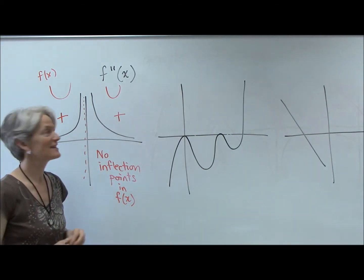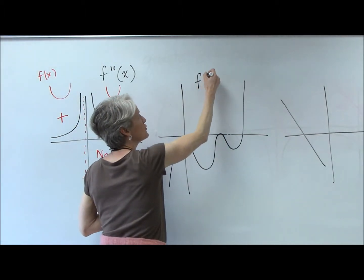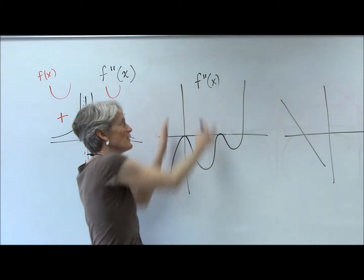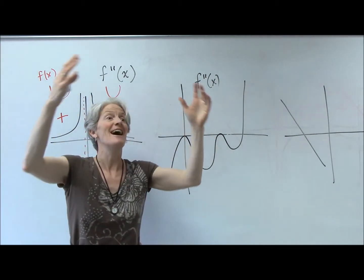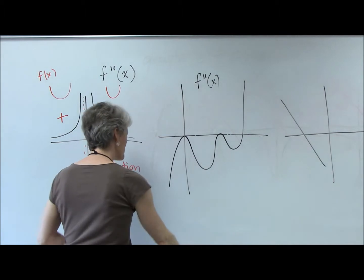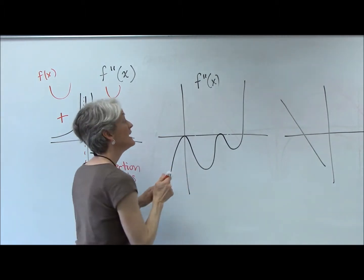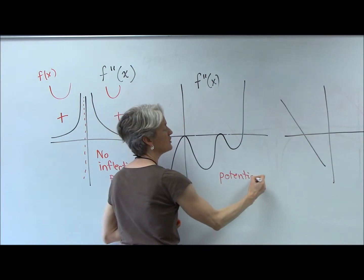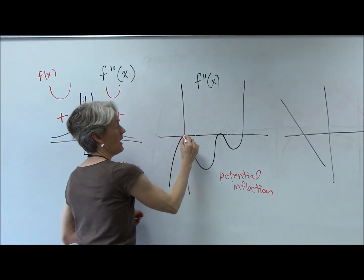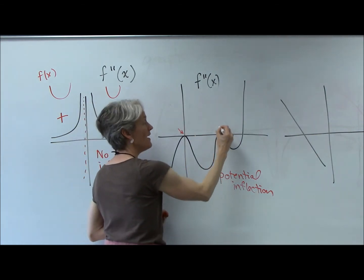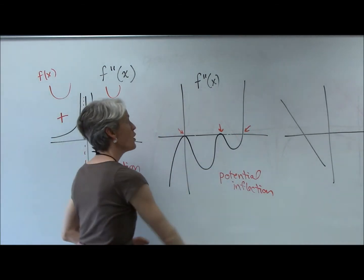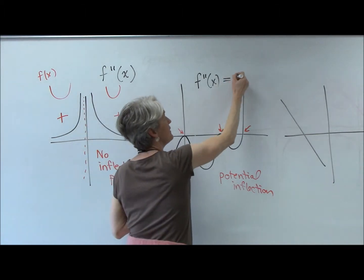Here we go again. This graph is the second derivative — it's not the function. The y-value of the second derivative is the concavity of the original function. Let's look for potential inflection points. Where could I have some potential inflection points? Those are three potential inflection points because my second derivative is zero at those locations.